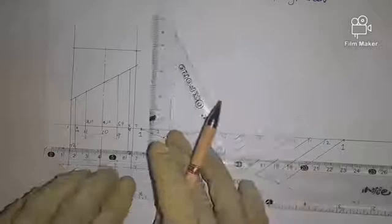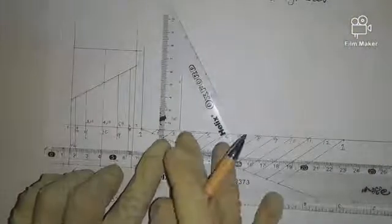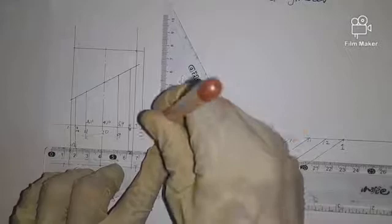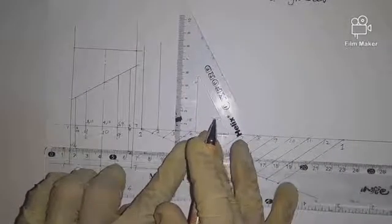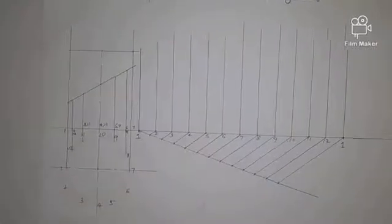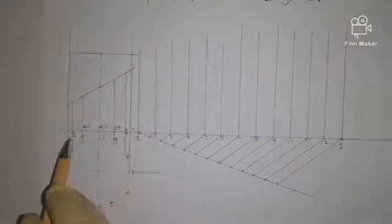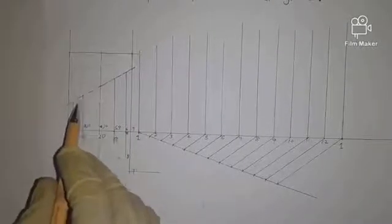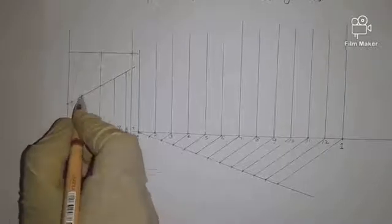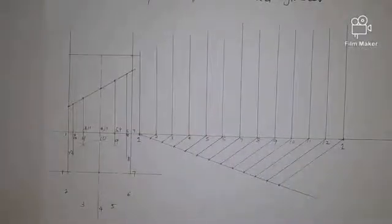We draw vertical lines through each of those 12 division points, starting from the baseline upward. These vertical lines are where we will plot the heights of our development. We then project horizontally, using the T-square, the points where the cutting plane meets each generator line in the front elevation, across to meet the corresponding verticals in the development.